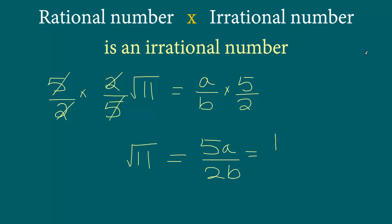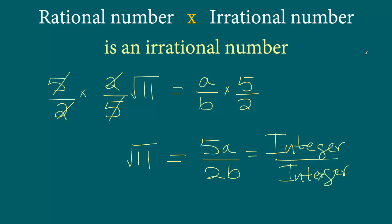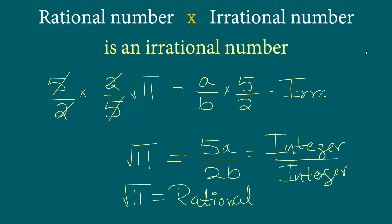Now 5a will be an integer and similarly 2b will be another integer, so on the right hand side we have integer over integer. We basically see square root 11 is equal to a rational number, which we know factually is incorrect. Hence our assumption is incorrect, and hence the original number 2/5 times square root 11 is actually an irrational number. This is how we solve these types of questions.